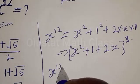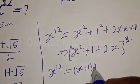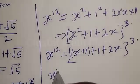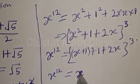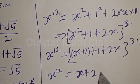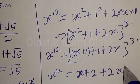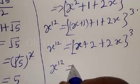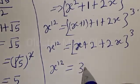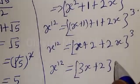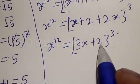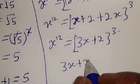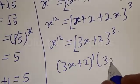Since s squared equals s plus 1, substituting gives us s raised to power 12 equals (s plus 1 plus 1 plus 2s) raised to power 3, which simplifies to (3s plus 2) raised to power 3. So we now have s raised to power 12 equals (3s plus 2) raised to power 3.